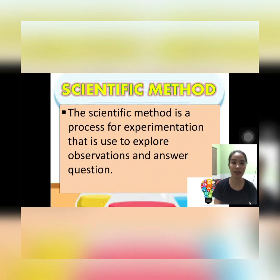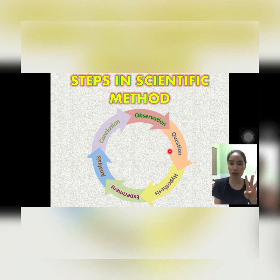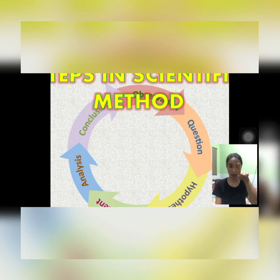The scientific method has different steps — let's find them out. The steps of the scientific method are: observation, question, hypothesis, experimentation, analysis, and conclusion. As you can see, it goes around a cycle, so all the steps must be followed.